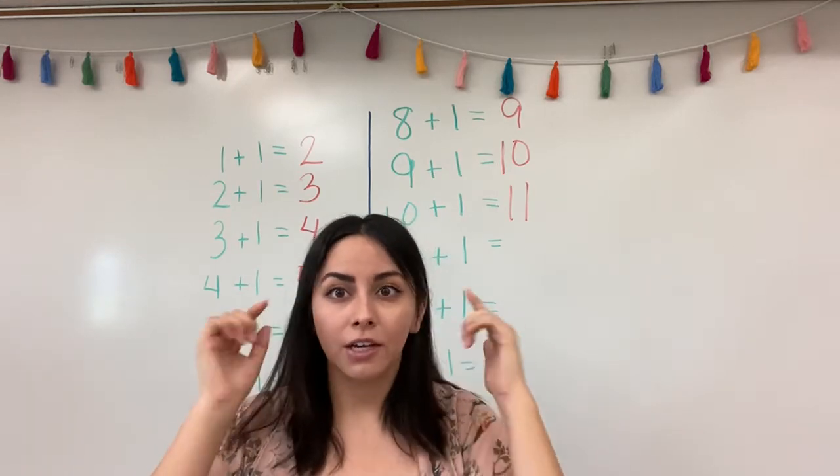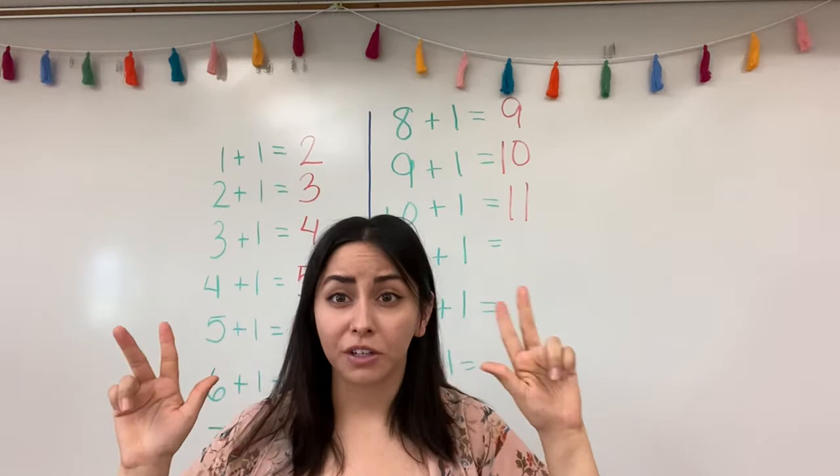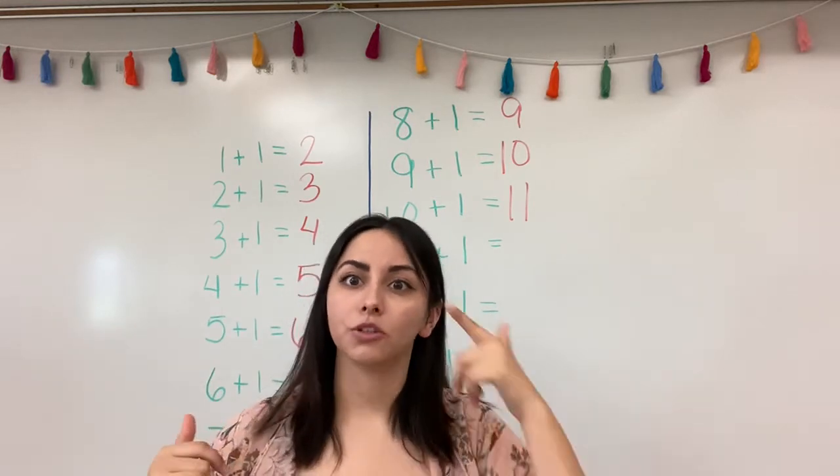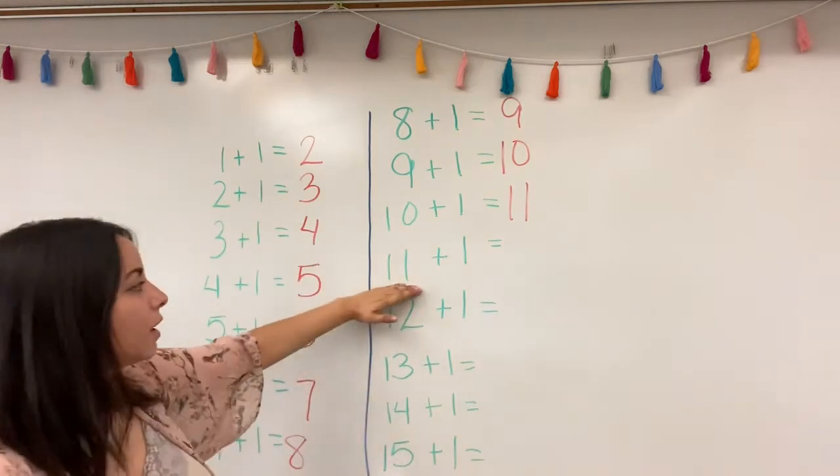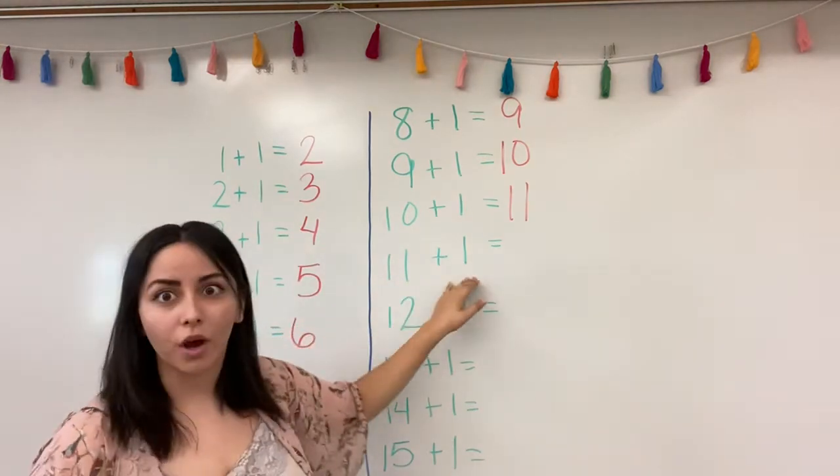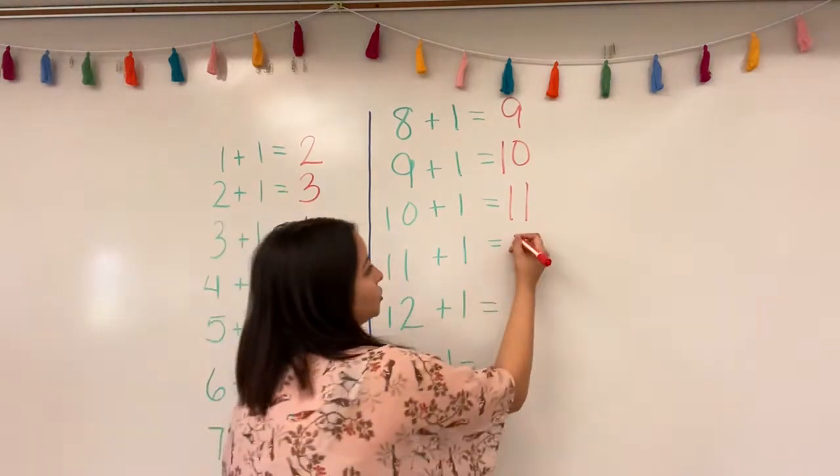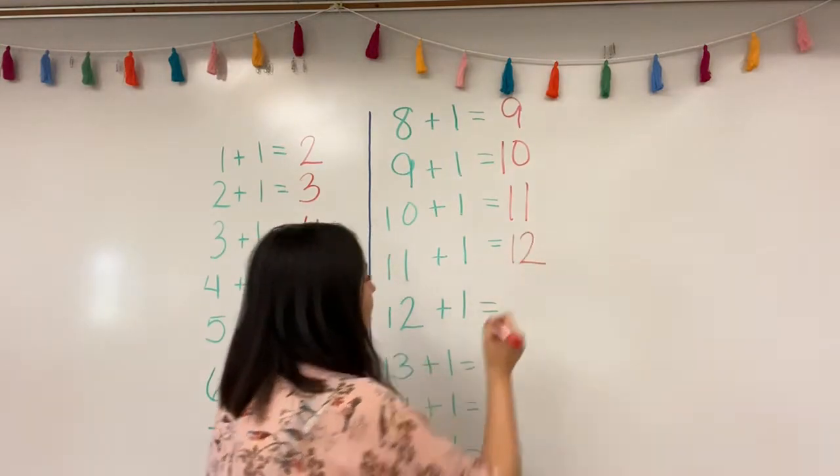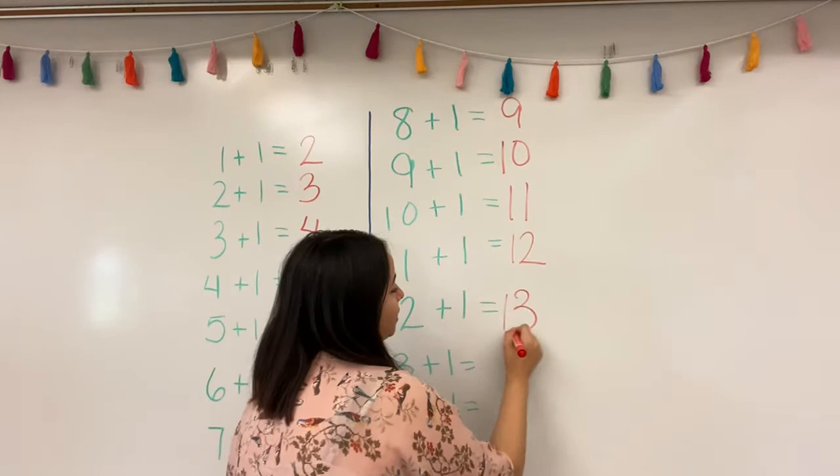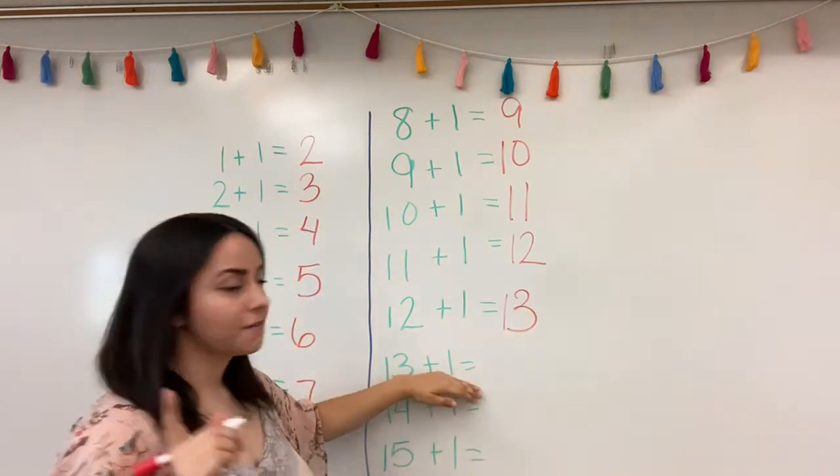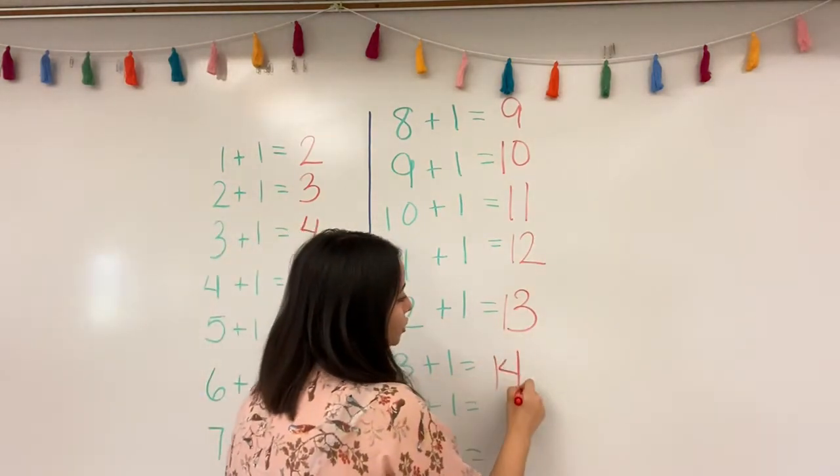So that's why we have to start memorizing it and keeping it in our brains so we can put it together in our brains and go, oh yeah, eleven plus one is twelve. We're able to do it in our head. So soon, right now you might be using your fingers, but after that you'll be able to do it in your head like that. So what's eleven plus one? Twelve. Excellent job. Then twelve plus adding one more? Thirteen. Thirteen plus one? Fourteen. Good job.